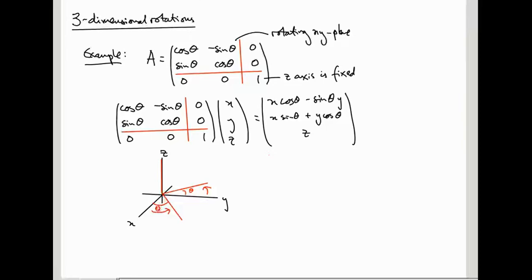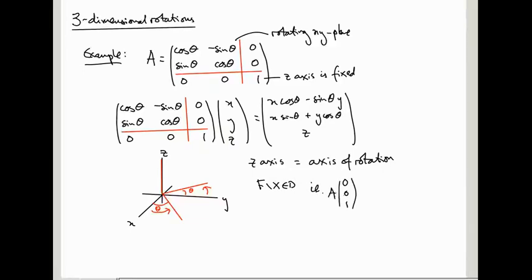The key thing here is that the axis of rotation is fixed. If you pick a vector pointing in the z-direction — say (0, 0, 1) — and apply matrix A to it, you just get the same vector (0, 0, 1) back. It's a fixed vector. Just as with 2x2 matrices, fixed vectors are important for understanding which vector is the axis of rotation.